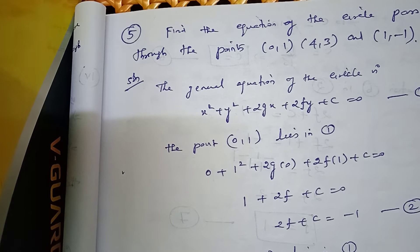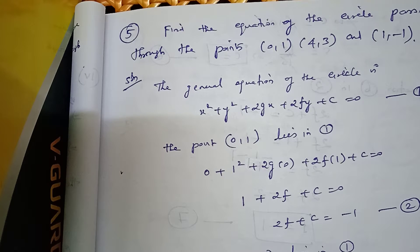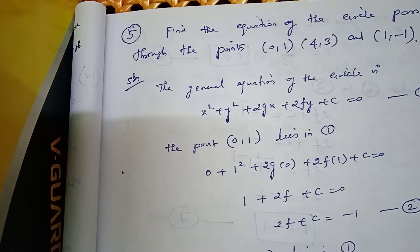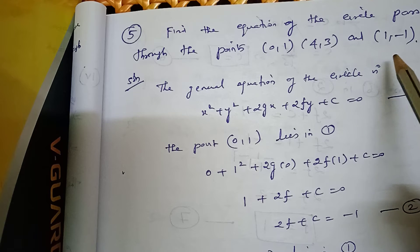Sum number 5: find the equation of the circle passing through the points (0, 1), (4, 3), and (1, -1).